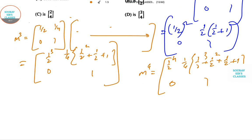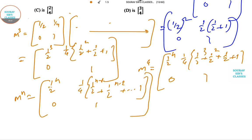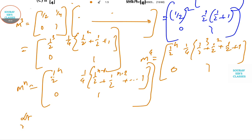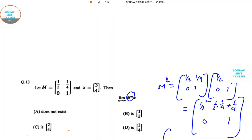Obviously our answer to M^N is [(1/2)^N, 1/4·((1/2)^(N-1) + (1/2)^(N-2) + ... + 1); 0, 1]. If we go for limit N tends to infinity M^N·X, the main problem is the limit doesn't exist. We can't put the limit because of the absence of convergence. So option number A is correct.